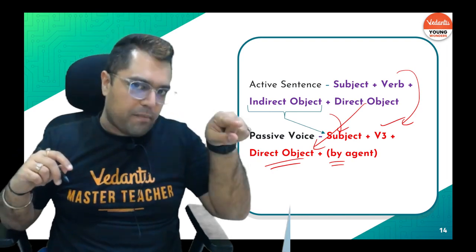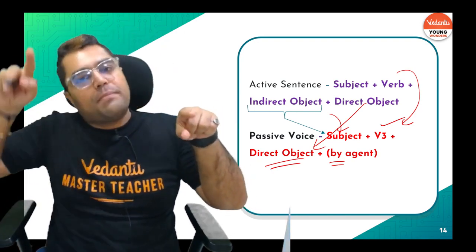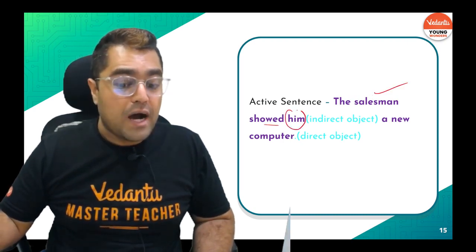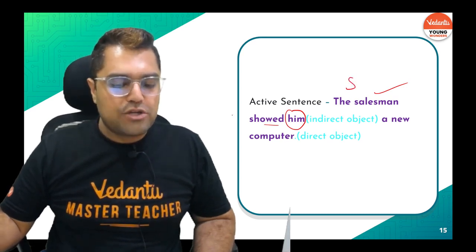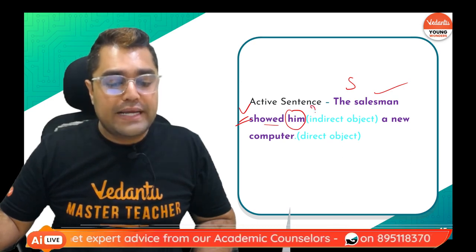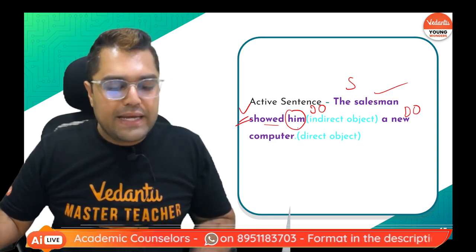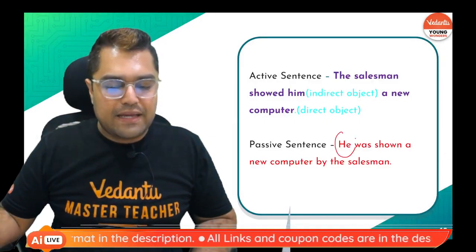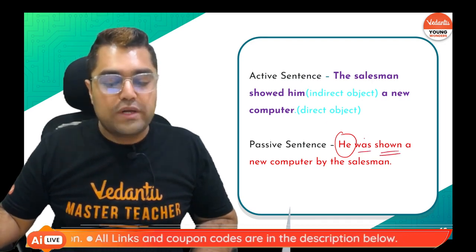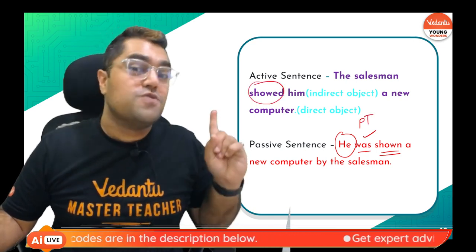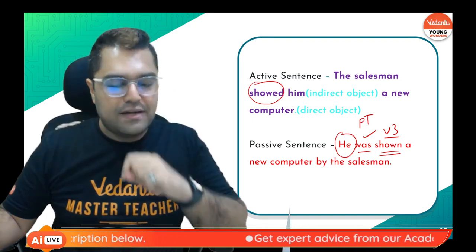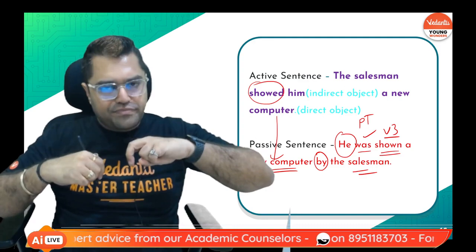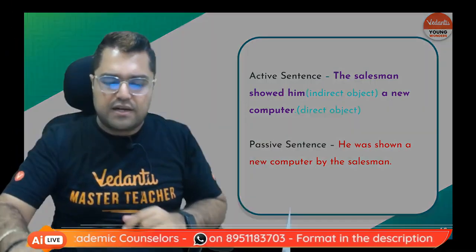Let's take an example: 'The salesman showed him a new computer.' The salesman is the subject, 'showed' is the verb, 'him' is the indirect object, and 'a new computer' is the direct object. Now, take the indirect object first — 'him' becomes 'he' — and was shown (past tense, so 'was' + V3 'shown'), then 'a new computer' stays as it is, then 'by the salesman.' So: 'He was shown a new computer by the salesman.'